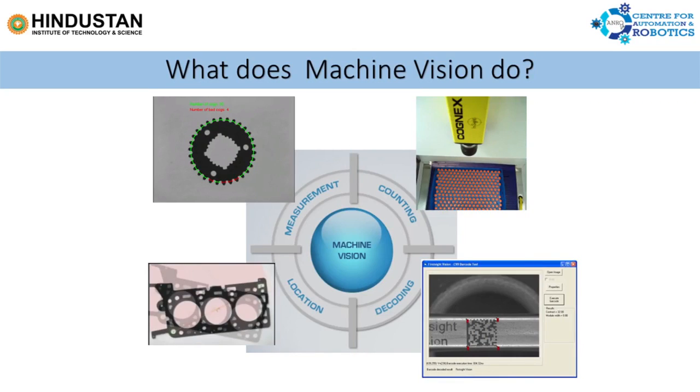What does machine vision do? We can broadly categorize all the applications or functionalities of machine vision under four categories: number one is measurement, two is counting, three is decoding, and four is location.